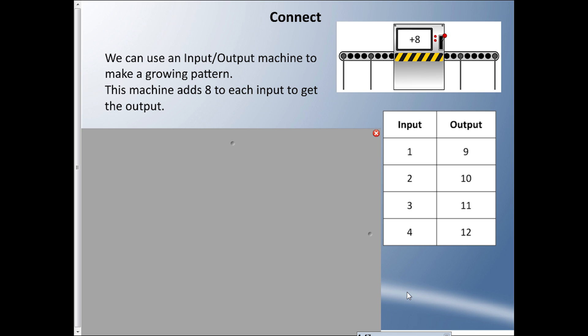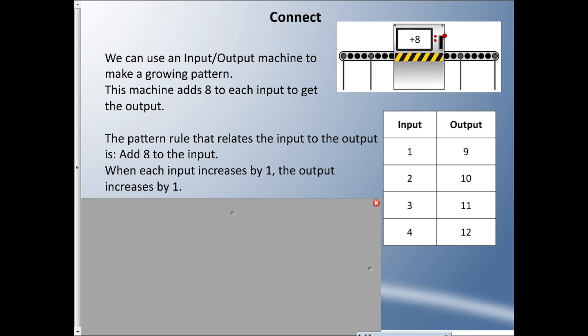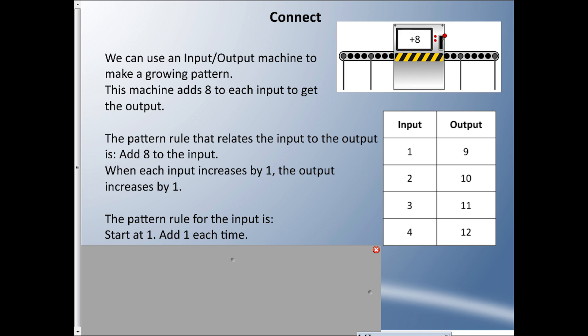Now we're going to use an input-output machine to make a growing pattern and talk about pattern rules. This machine adds eight to each input to get the output. So if I input one, I output nine; input two gives ten; input three gives eleven. When each input increases by one, the output also increases by one. So there are pattern rules for both the input and the output.